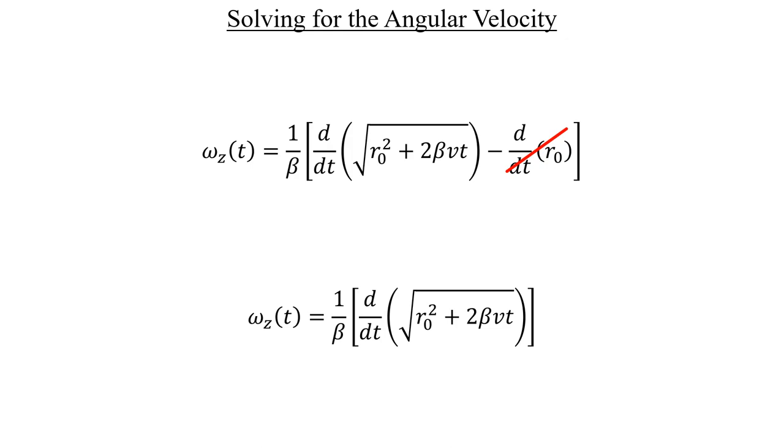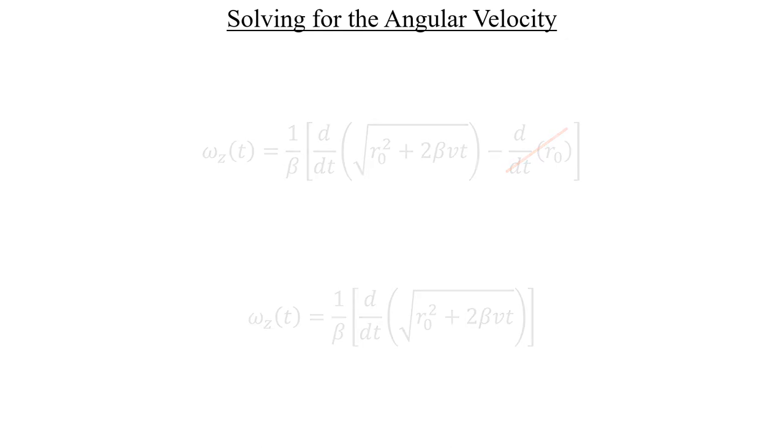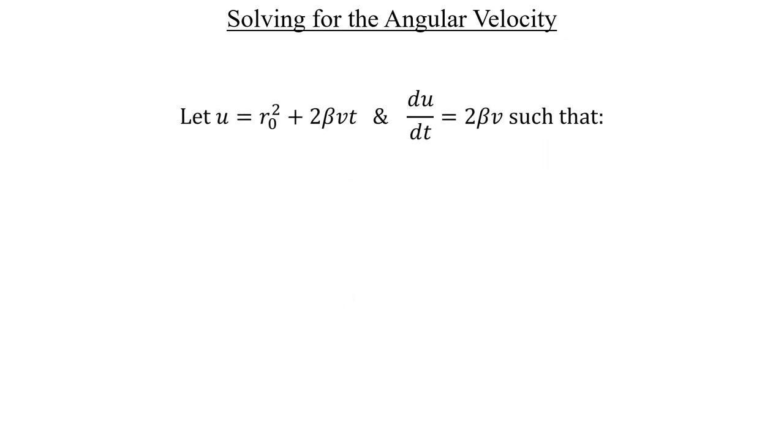With that out of the way, we're now ready to begin the process of using the chain rule for this derivative. Our innermost function will be everything inside the square root and the outermost one will be the square root function itself. So what we're going to do is first let our substitution variable u be equal to the innermost function. And then we'll take a derivative of both sides with respect to t to get du dt.